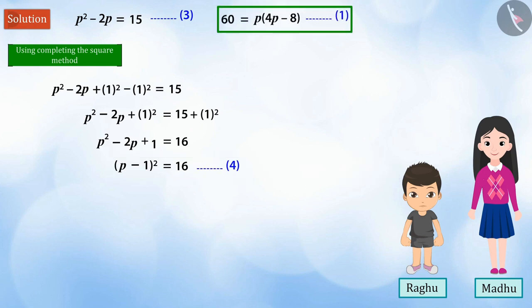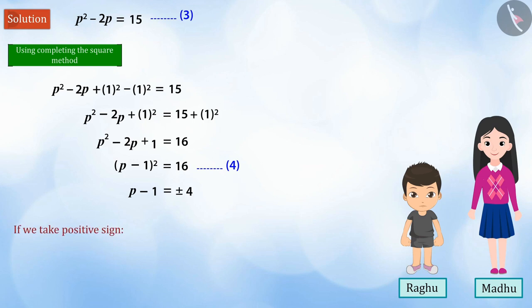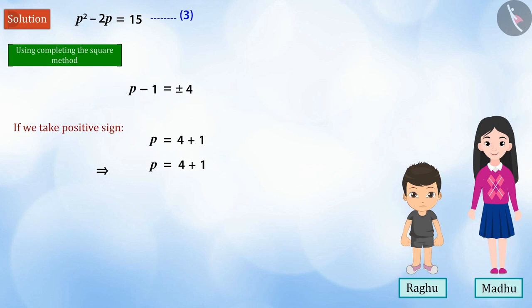Note that the solution of equation 1 will be the same as that of equation 4, which gives the value of p - 1 equal to plus or minus 4 after solving. Thus, if we take the positive sign, the value of p will be 5, and if we take the negative sign, the value of p will be minus 3.